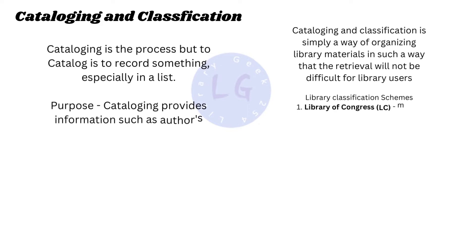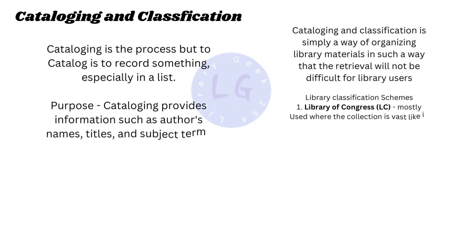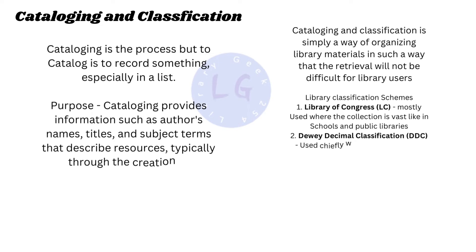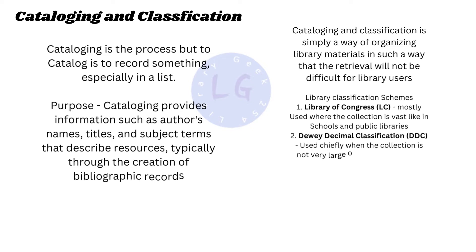Why are we doing cataloging? The purpose is to provide information such as author's names, titles, and subject terms that describe resources, typically through the creation of bibliographic records. Cataloging and classification is simply a way of organizing library materials so that retrieval will not be difficult for library users.